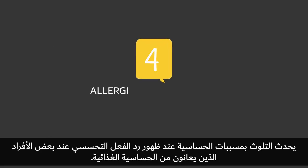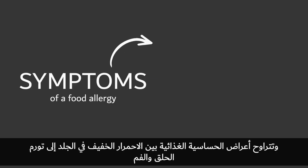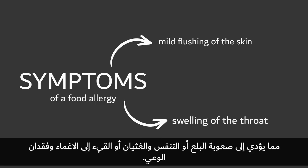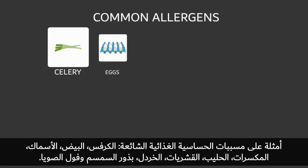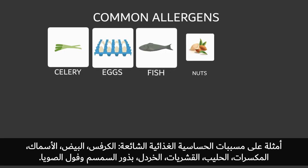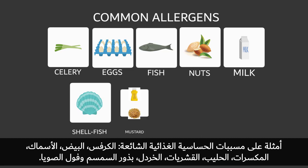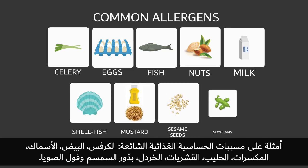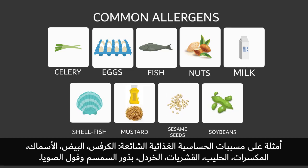4. Allergic contamination happens when some people experience allergic reactions to certain foods. Symptoms of a food allergy range from a mild flushing of the skin or swelling of the throat and mouth that causes difficult swallowing or breathing, to nausea or vomiting, to collapse and unconsciousness. Common allergens include celery, eggs, fish, nuts, milk, shellfish, mustard, sesame seeds, and soybeans.